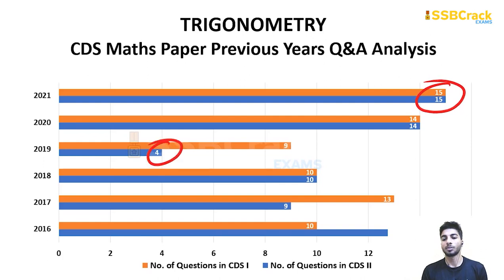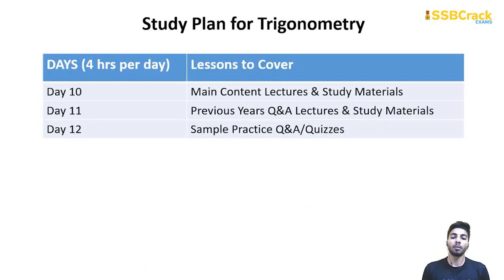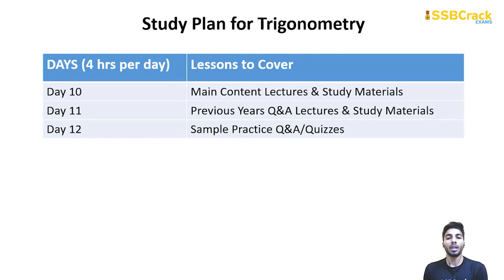For Trigonometry, the minimum number of questions is 4, so it is also an important topic. You have to cover it over three days: Day 10, Day 11, and Day 12.